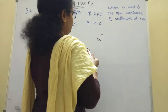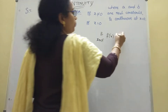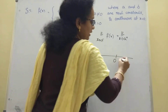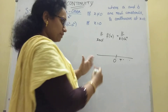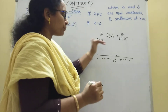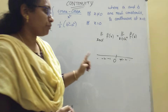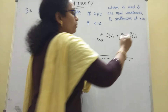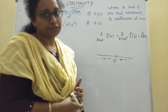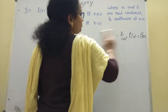For continuity, we need: limit as x tends to a⁻ of f(x) — the left hand limit — equal to limit as x tends to a⁺ of f(x) — the right hand limit. Here at zero, the left hand side has negative values and the right hand side has positive values. The left hand limit and right hand limit must be equal to each other and also equal to f(x). Then we say the given function is continuous.